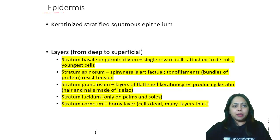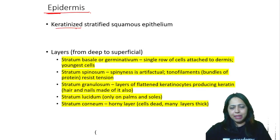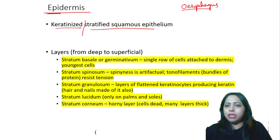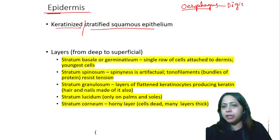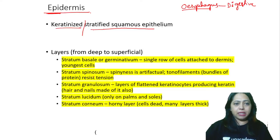Going to the epidermis — when I say it is the outermost one, the epithelium is keratinized stratified squamous epithelium. It is keratinized only on the skin. If you remove the keratinized part, only stratified squamous epithelium is present in the esophagus and such regions — esophagus, digestive system, buccal cavity. All that will be stratified squamous, not keratinized. Only the skin will have keratinized epithelium.